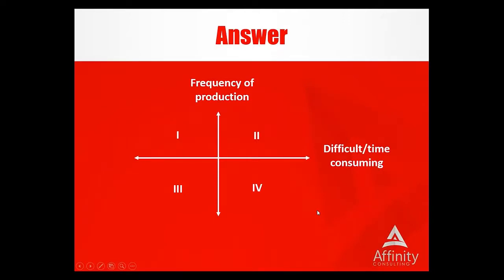There's also a difference in what type of documents you want to automate. A really good way to think about this is a graph with four quadrants. On one axis is frequency of production — how often am I producing that type of document? And the other axis is whether it's difficult or time-consuming. If you're in quadrant three — easy and infrequent — you probably don't need to automate it. The big gains are really in the top part of the graph, where you're doing the same kind of document over and over again.